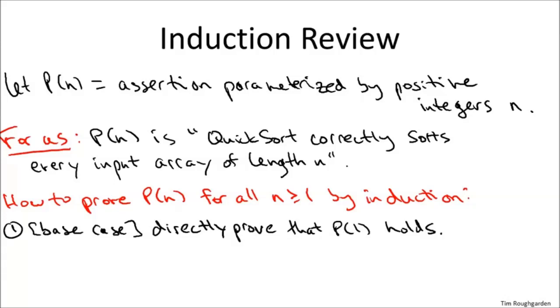So the non-trivial part of a proof by induction is usually the inductive step. And in the inductive step, you look at a value of n not covered by the base case, so a value of n bigger than one, and you show that if the assertion holds for all smaller values, small integers, then it also holds for the integer n.